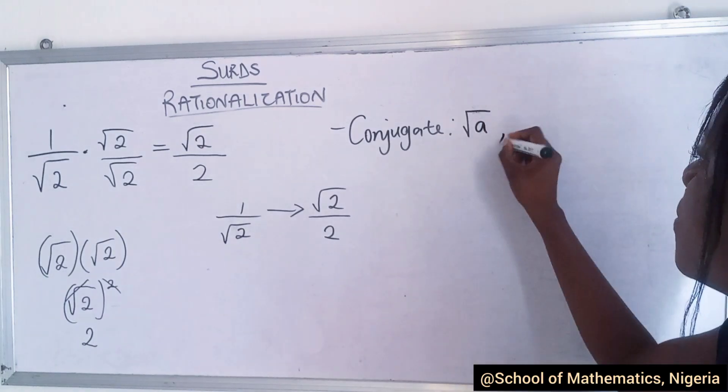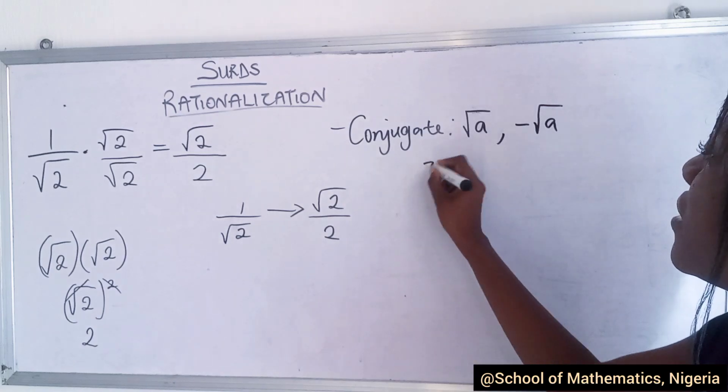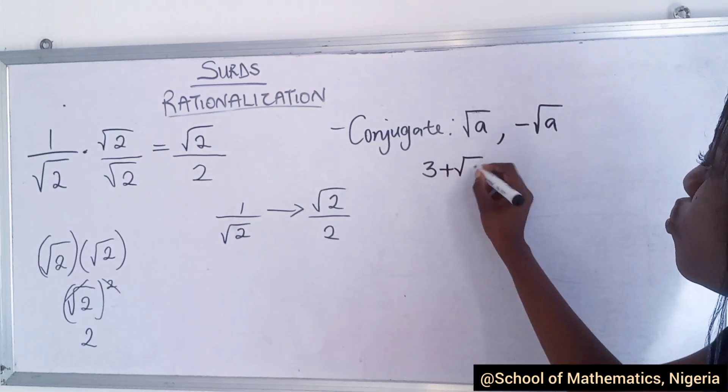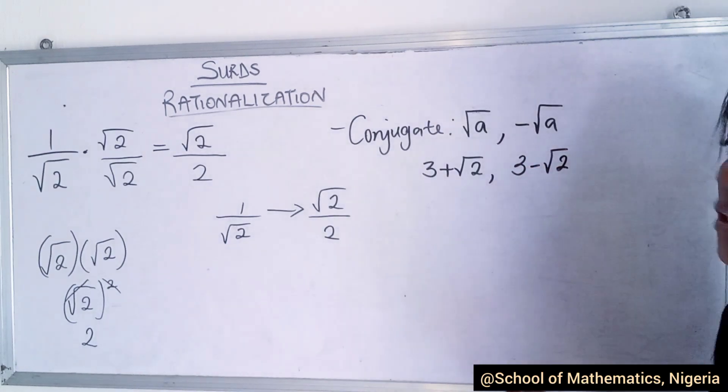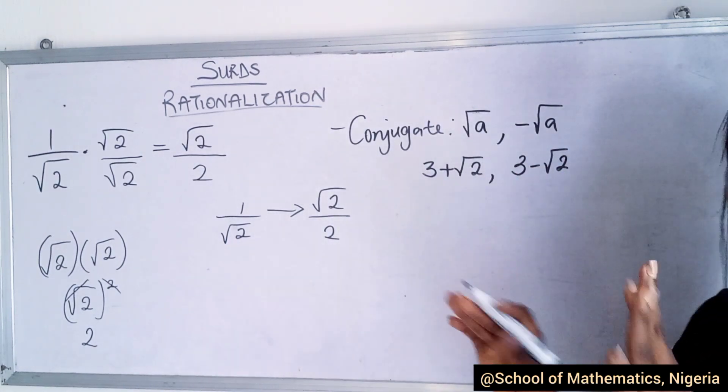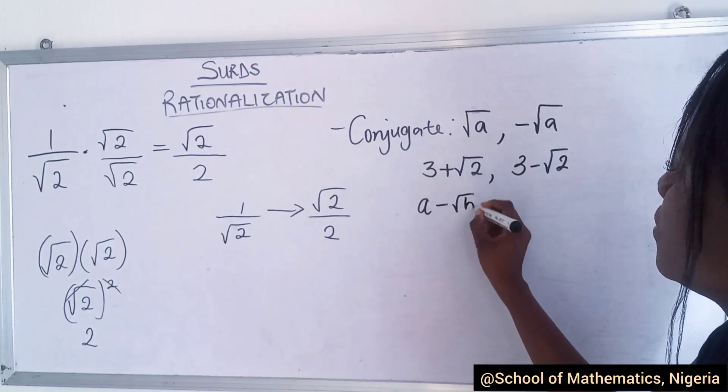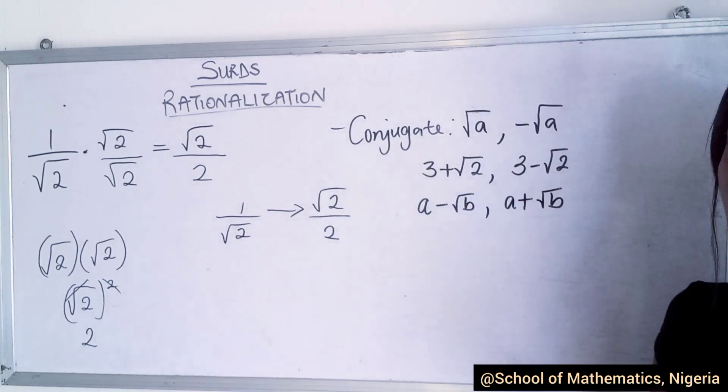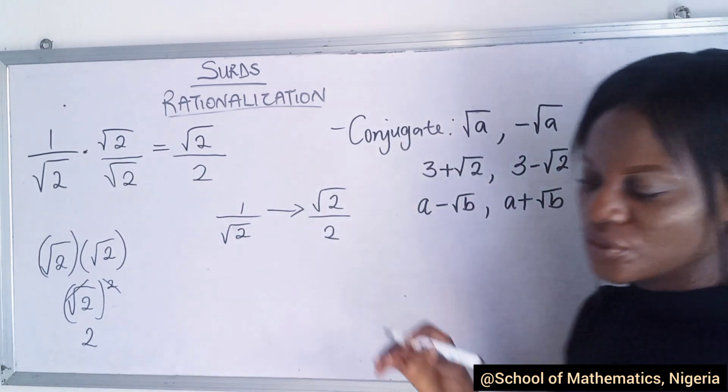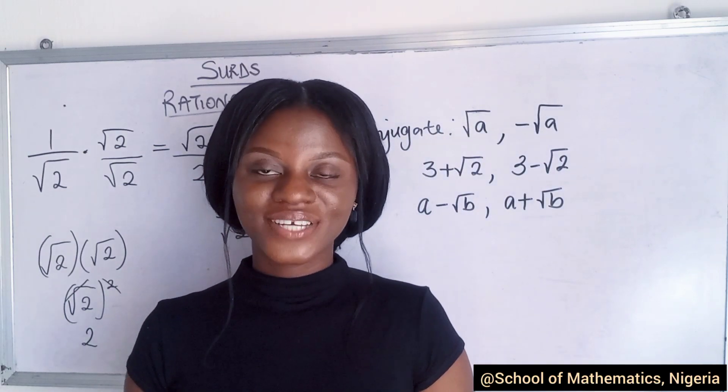If you are given √a, its conjugate is -√a. If you are given 3 + √2, its conjugate is 3 - √2. It's always the sign that changes. You are given a - √b, the conjugate is a + √b. I hope you got that. Now we are going to show examples so that you can get what we have been saying all along.